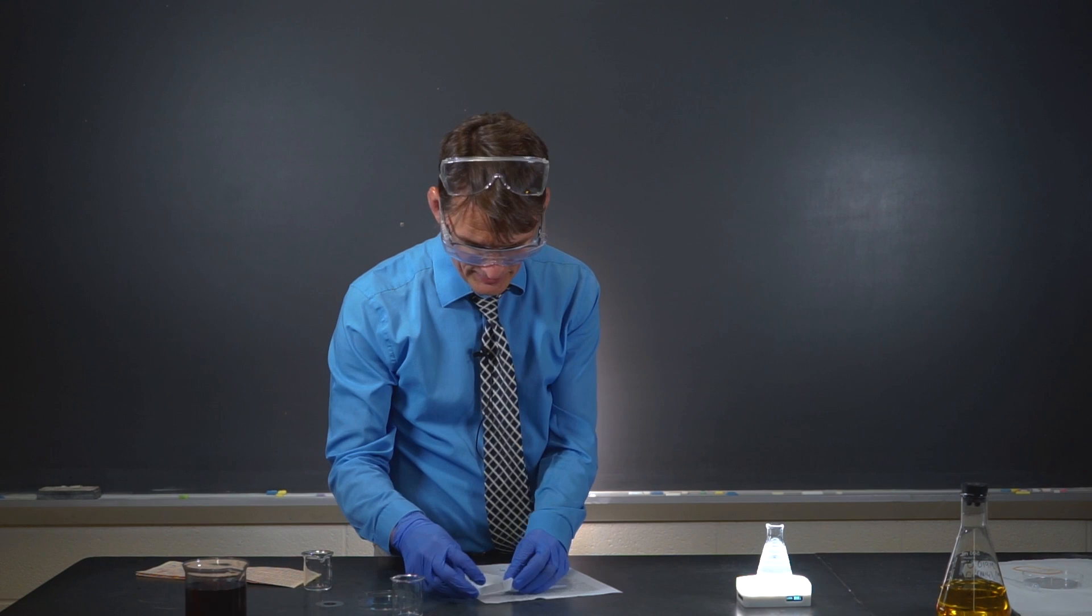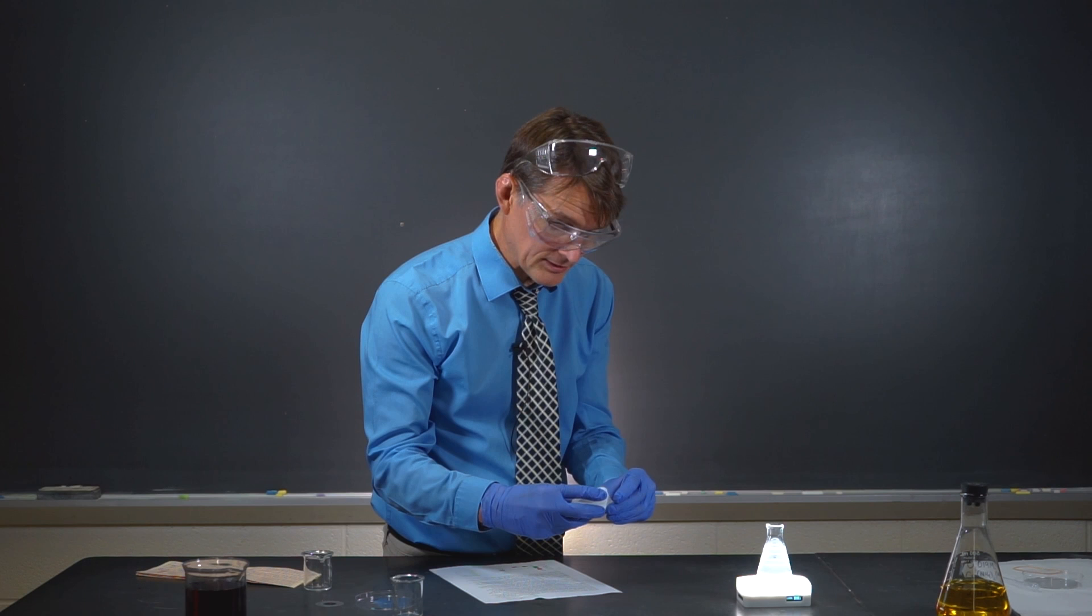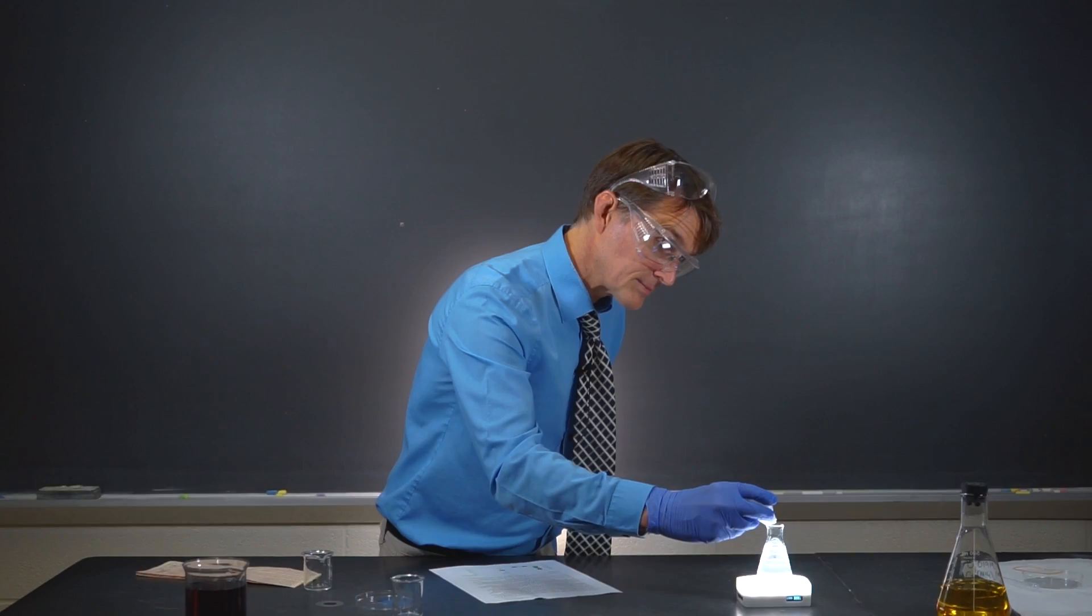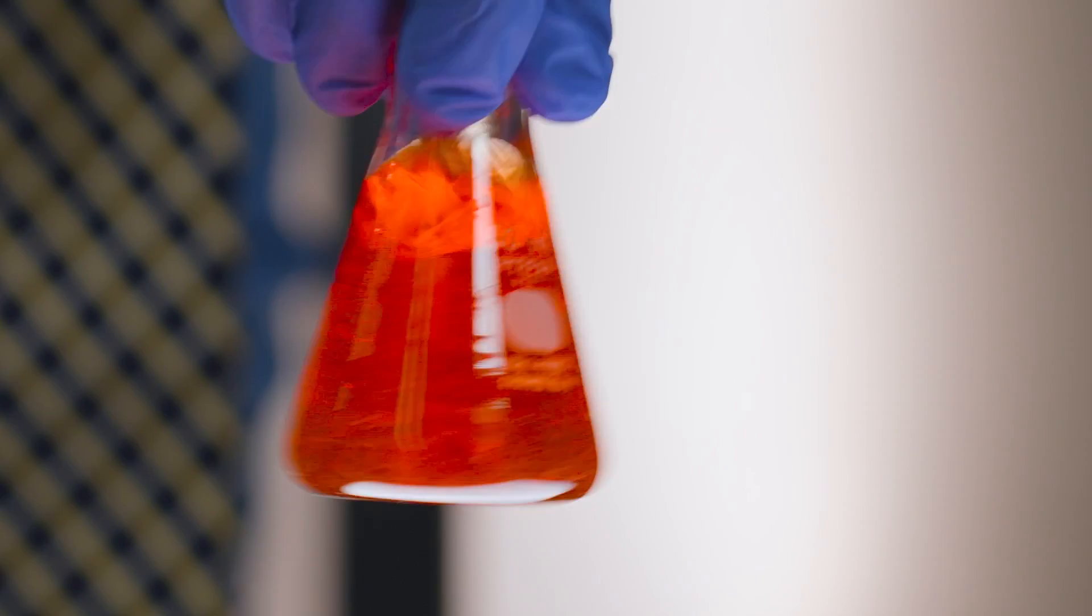So this has iron ions dissolved in it. Now we're going to add the iron indicator called ferroin. And ferroin is going to be red in the presence of iron 2 and blue in the presence of iron 3. Just pop this in, see what happens. So that's pretty easy to tell that we've got iron 2 in this solution for sure. Look at that beautiful red color. And there's our indicator.